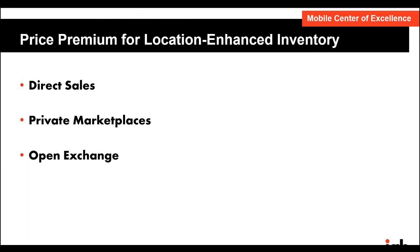At the most basic layer, if you're trying to monetize remnant inventory or haven't yet incorporated location targeting into your ad products, you can still gain value by passing the user's lat/long into the open exchange. OpenRTB lets you pass in lat/long plus other metadata the device pulls around locations, such as freshness and speed. If you're passing in accurate, fresh, and precise information, you should see a premium on the open exchange because many DSPs are hungry for that type of inventory to layer their own targeting on.